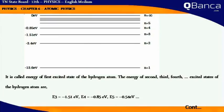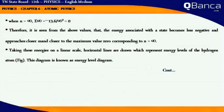It is called the energy of first excited state of the hydrogen atom. The energy of second, third, fourth excited state of the hydrogen atom: E3 = -1.51 eV, E4 = -0.85 eV, etc. When n = infinity,